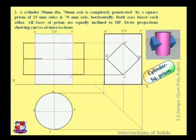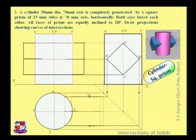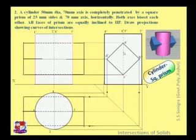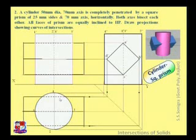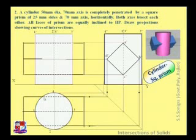After drawing this front view, draw its top view by projecting vertical lines and horizontal lines. Now this prism is inside the cylinder. So this upper edge will not appear in the top view. The edge which is not visible in any view is shown by a dotted line. So this line should be dotted, which is inside the circle.